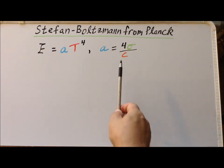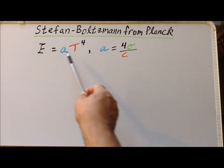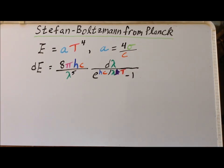a is defined to be 4 times sigma divided by c. In this derivation, we will determine the values of a and sigma from the Planck distribution. We recall the Planck distribution: dE is equal to 8πhc over λ to the fifth power times dλ over e to the hc divided by λkT all minus 1.